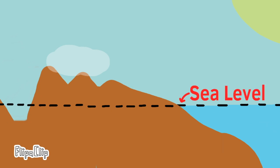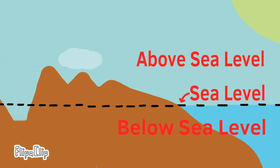The black dotted line represents sea level. Above the line would be above sea level. Below the line would be below sea level.